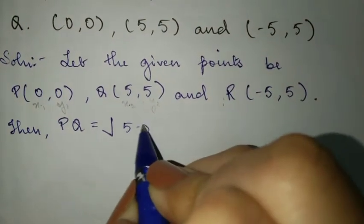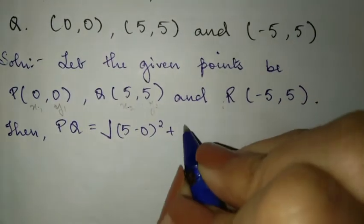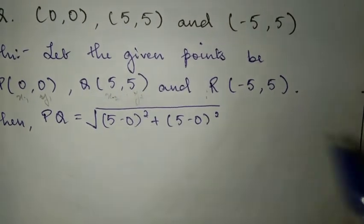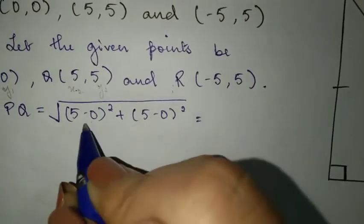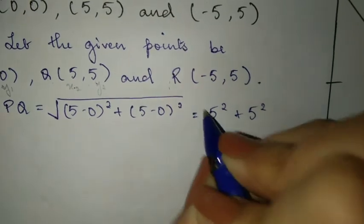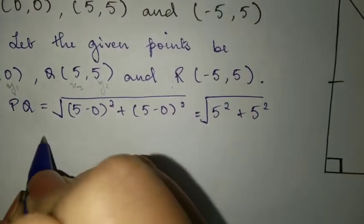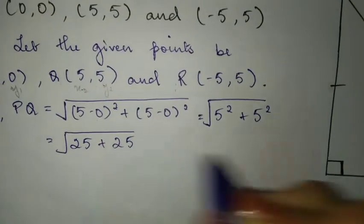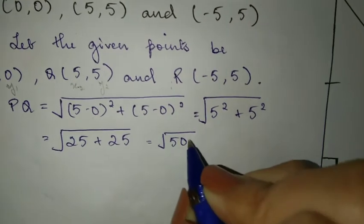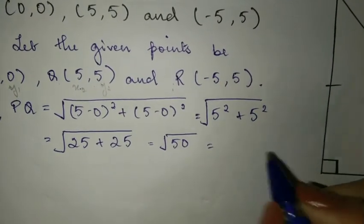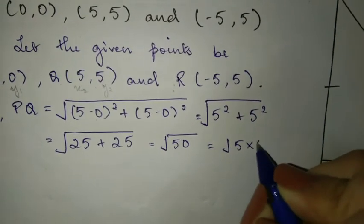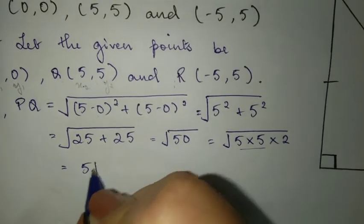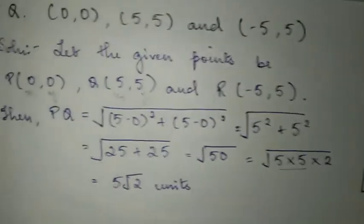So you have 5 minus 0 over here. If you want, you can directly write 5. I'm just showing you all the steps so that no one will have any doubts. 5 squared is 25. So you have 25 plus 25, which will give you 50, root 50. Using prime factorization and simplifying, 5 root 2 units is PQ.